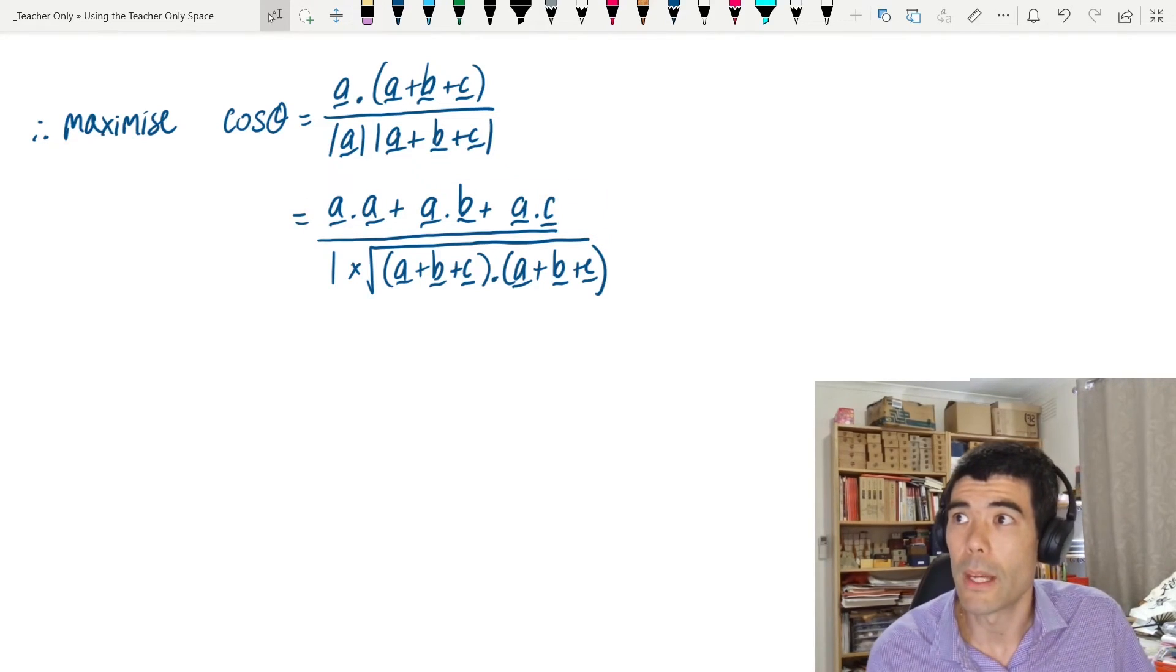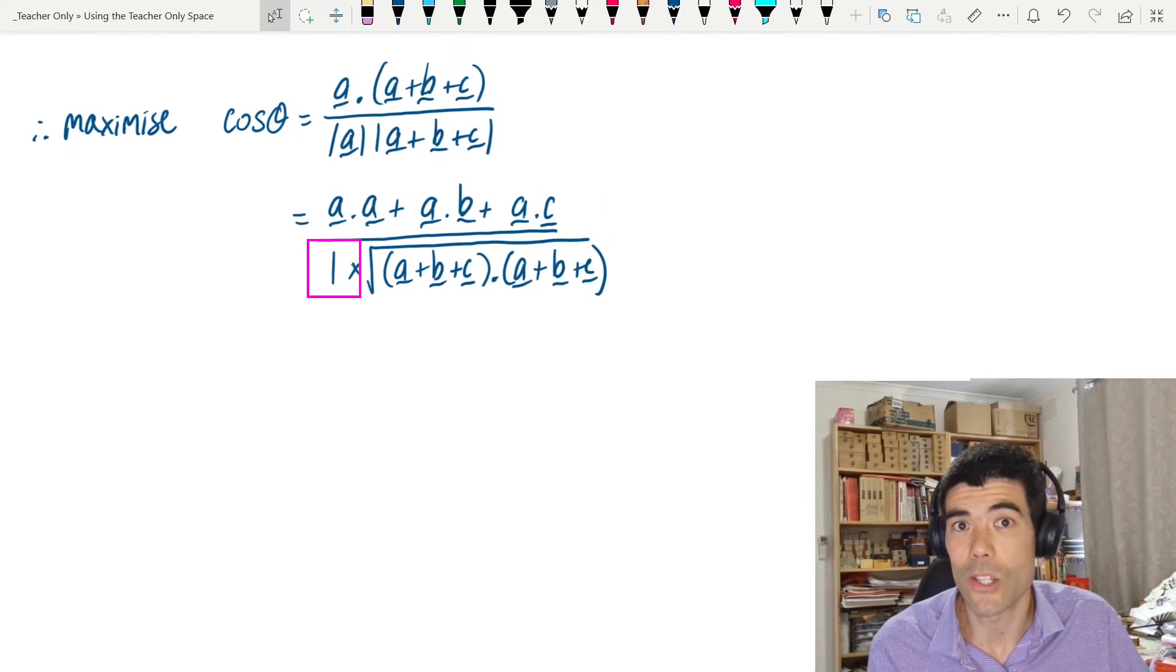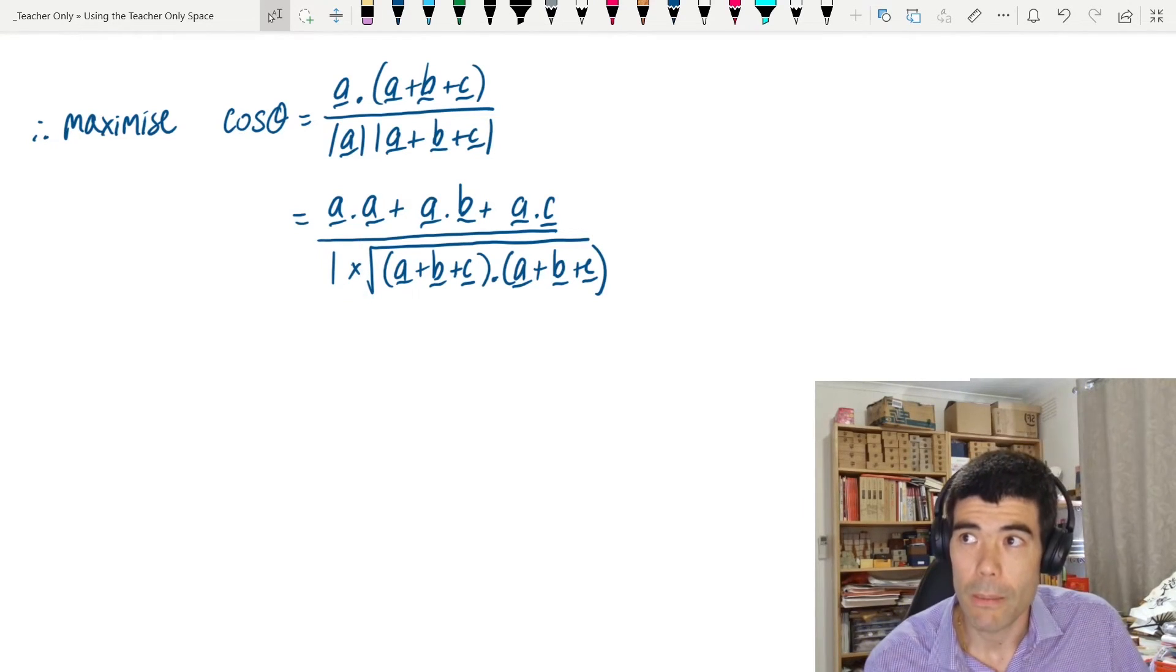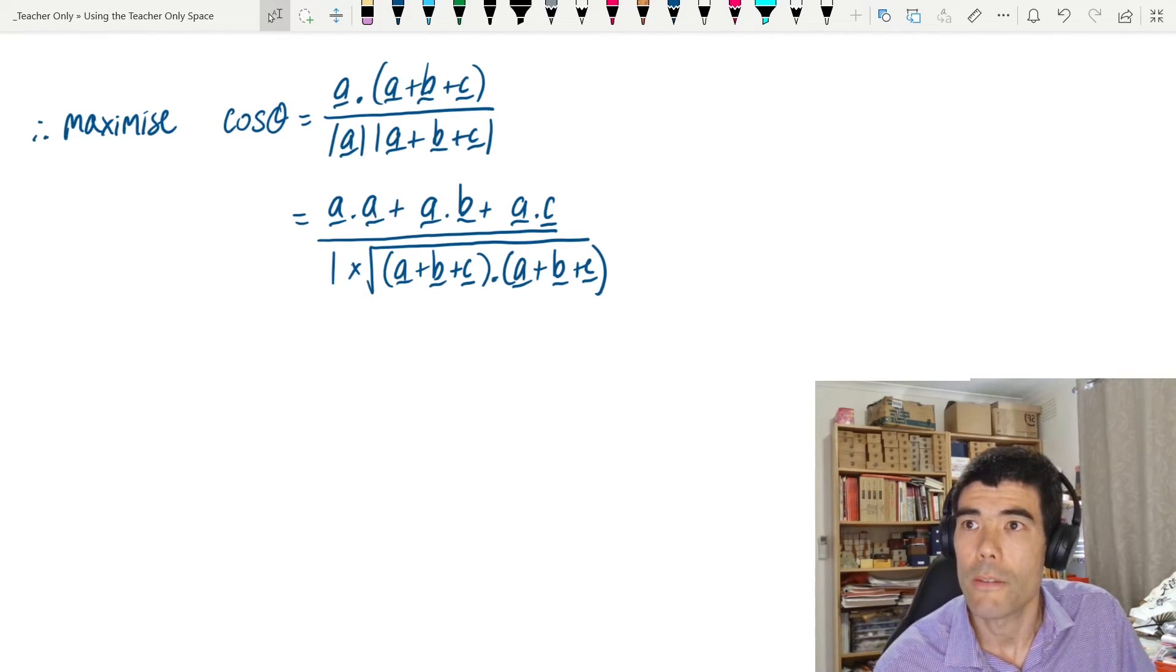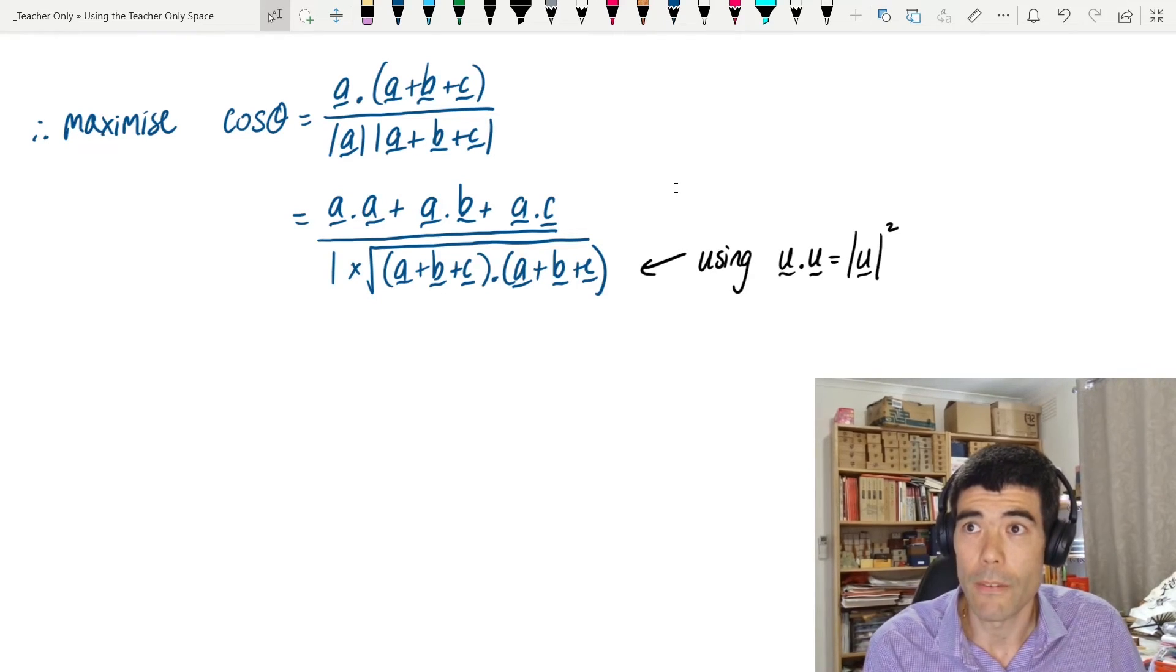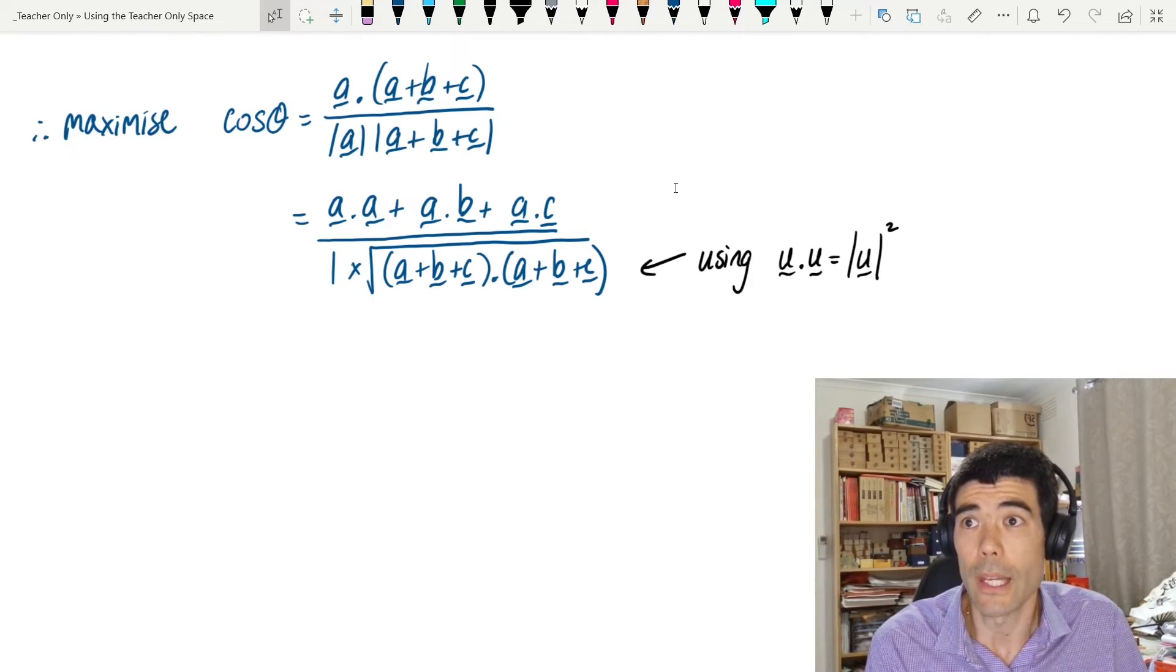And on the bottom there, well, again, length of a is 1, it's a unit vector, and the length of a plus b plus c, we can use the fact that the dot product of a vector with itself is the square of the length of that vector.